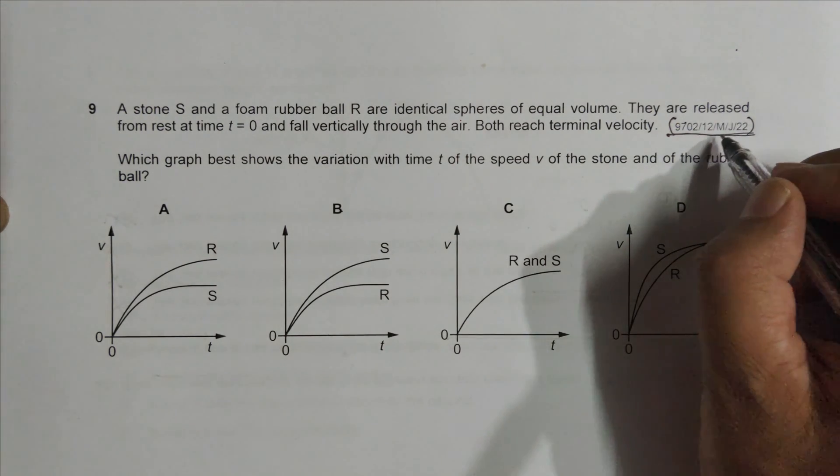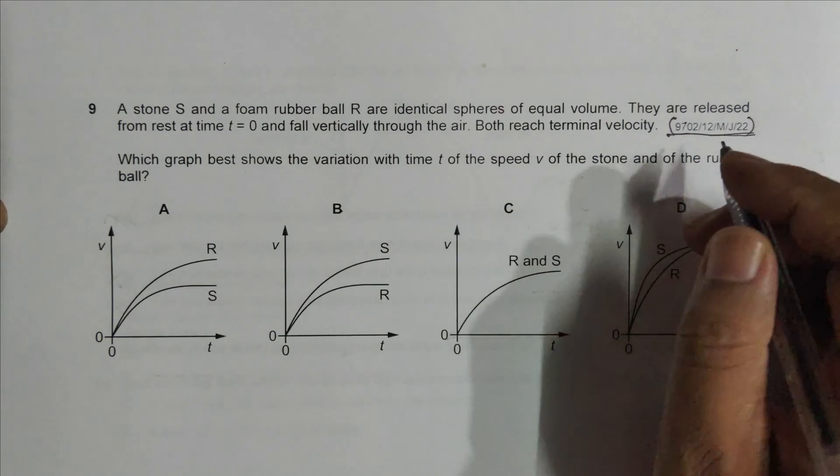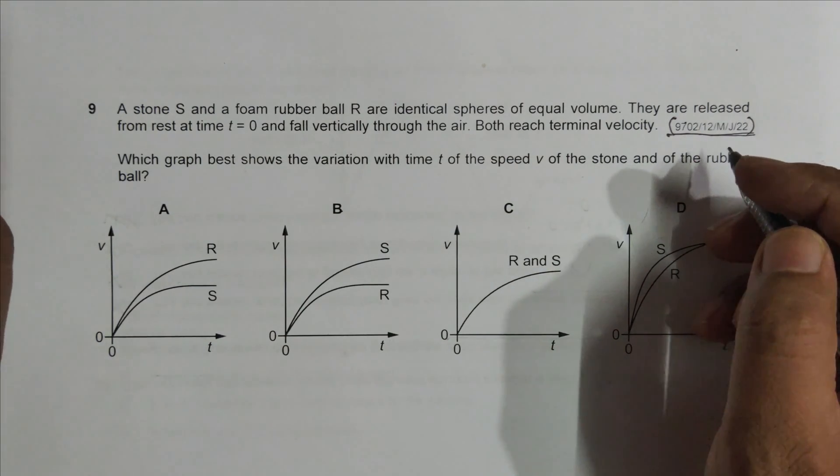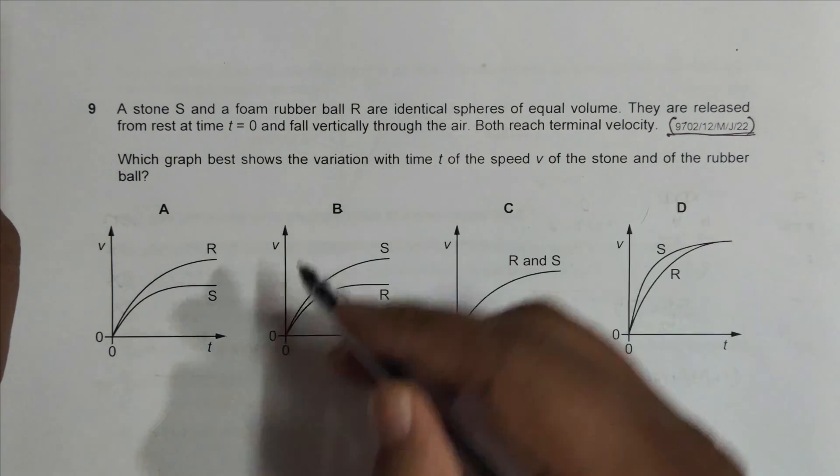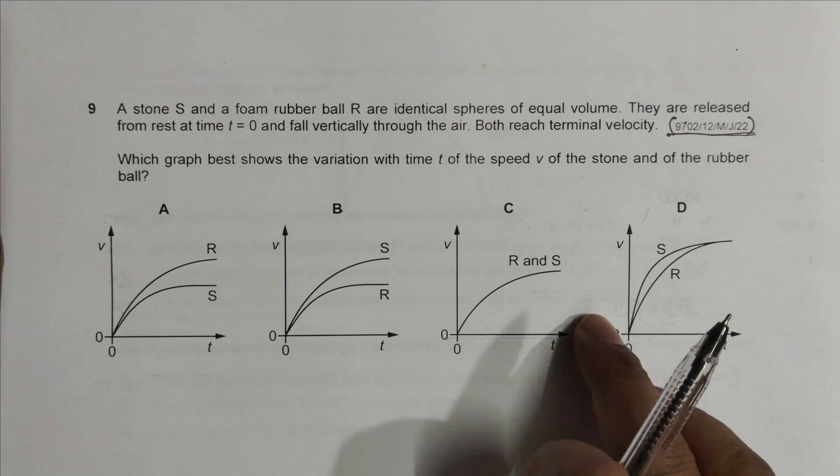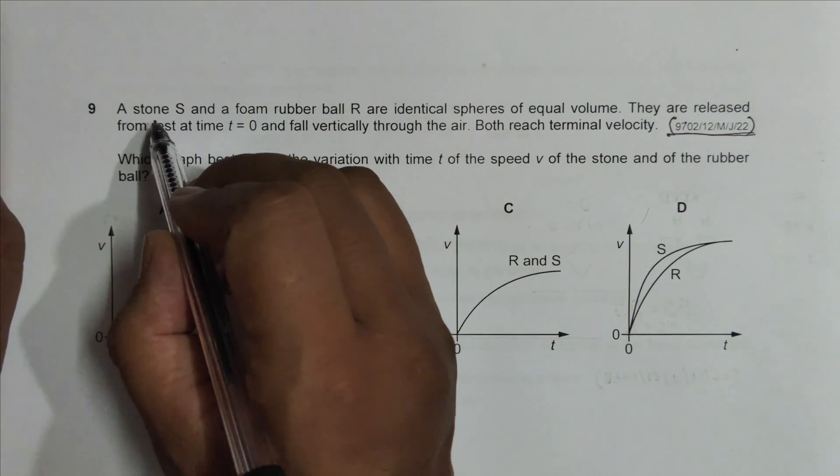Hello folks, this is a 2022 May-June Paper 1-2, question number 9. As you can see from the diagram, it's from the chapter we can say kinematics or forces. It says a stone S and a foam rubber ball R...